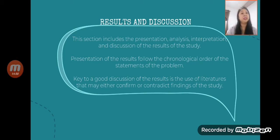So the results, this would be the presentation, analysis, interpretation, and discussion in the study. It can be given through graphs, through tables, or through pie charts or even infographics statistics. And then the results of the study should be following the order or the chronological order of the statement of the problem or the SOP. And also a good discussion would be by using different literatures to support, confirm, or contradict the findings of the study.